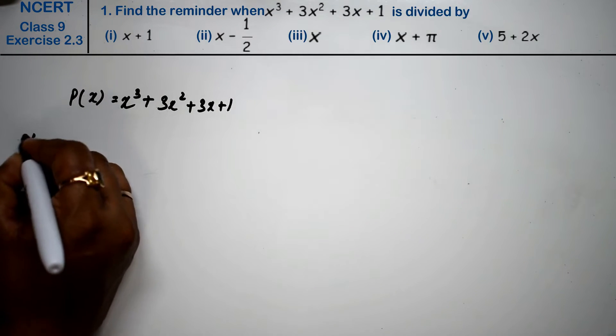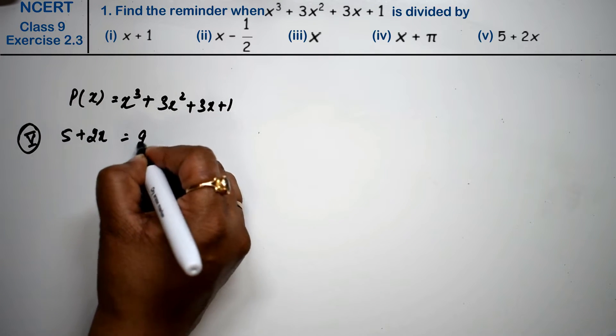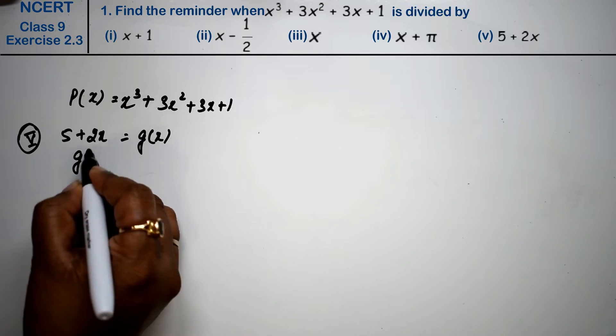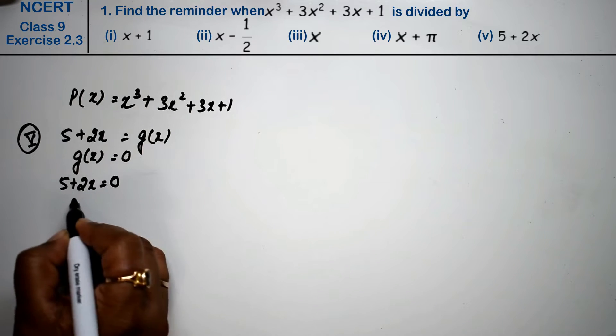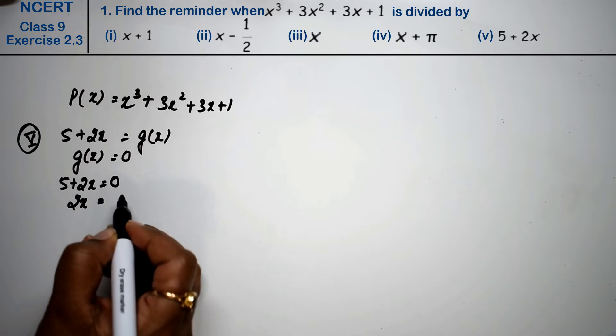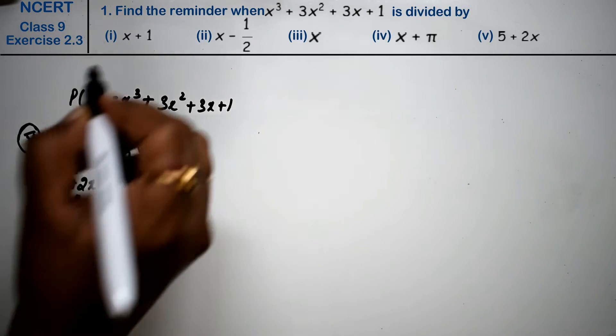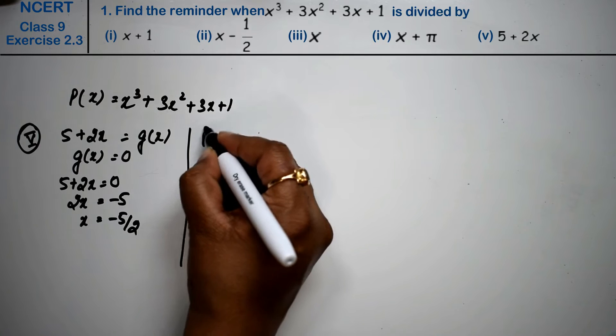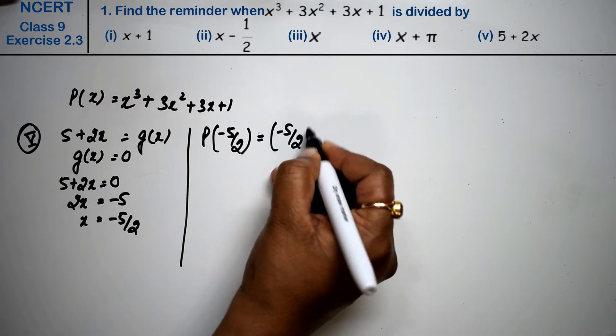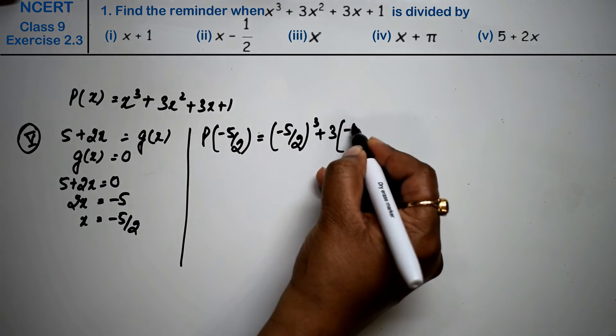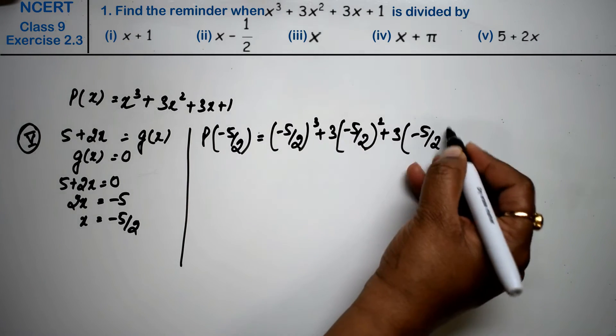Let's do fifth part. Fifth part is 5 plus 2x. We call this g(x). Now g(x) equal to 0 for remainder theorem, so 5 plus 2x equals to 0. 2x equals, this 5 was plus, it comes as minus, so x is minus 5 upon 2. Now we put this value in p(x). So minus 5 upon 2 cubed plus 3 into minus 5 upon 2 squared plus 3 into minus 5 upon 2 plus 1.